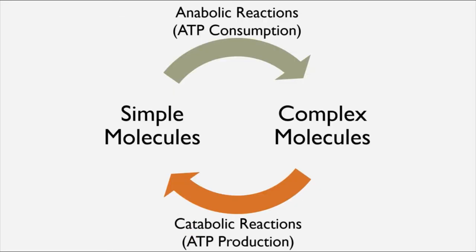So metabolism, as you can see in this graphic, is a give and take between catabolic and anabolic reactions. It is a constant cycle wherein complex molecules are being broken down through catabolic reactions into simple ones, and then those simple molecules are being built back up through anabolic reactions into more complex ones.